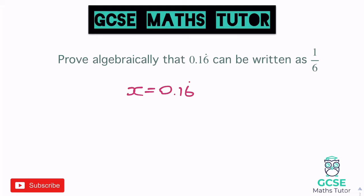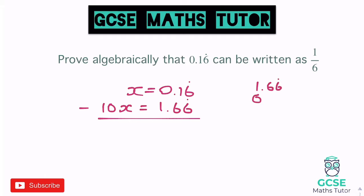Again, just like the first one, there's only one recurring decimal, so I can do this by multiplying by 10 again. So we get 10x equals 1.66. I'm only going to write the amount of 6s to balance it out with the same decimal places. When we take these away from each other, that recurring 6 is going to disappear. So 1.66 take away 0.16: the two 6s cancel out, 6 take away 1 is 5, and 1 take away 0 is 1, so it's 1.5. So 10x take away 1x gives us 9x, and that equals 1.5.